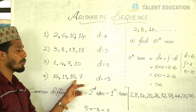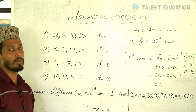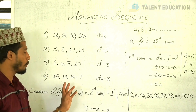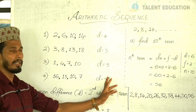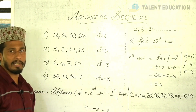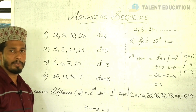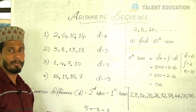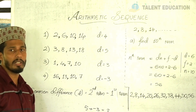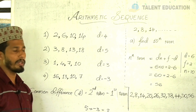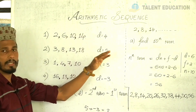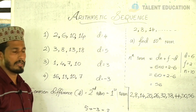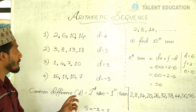If you multiply 3, then you multiply 3. Now, we multiply the arithmetic sequence. There is a common difference.